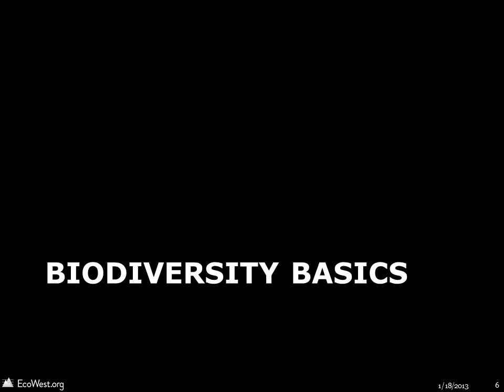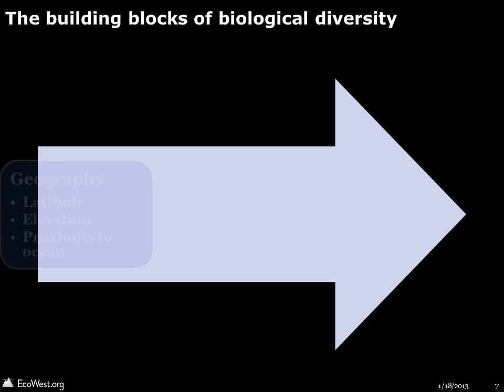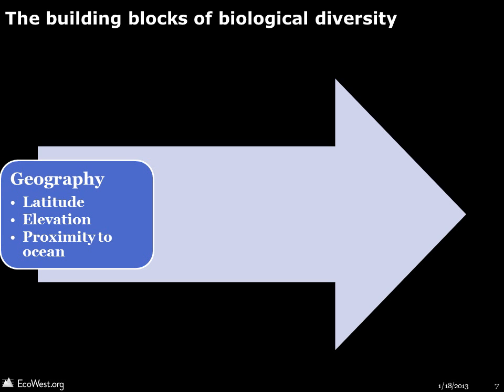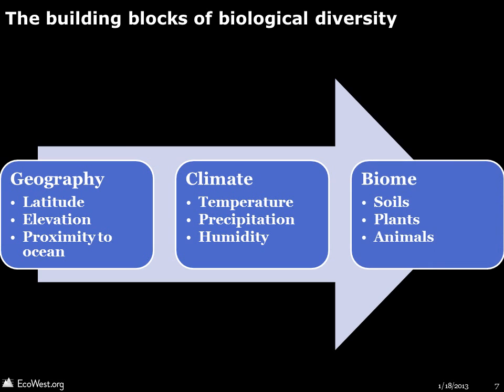Let's begin by discussing some of the basics of biodiversity. What explains why one part of the West has one set of species and another area, close by, has such a different suite of plants and animals? The biological diversity of a particular place depends on many factors, but there are some basic building blocks. The basic geography — its latitude, elevation above sea level, and distance from the ocean — plays a huge role in determining climate, temperature, precipitation patterns, humidity, and evaporation, establishing critical parameters for species.